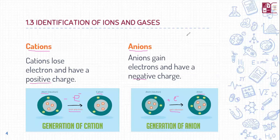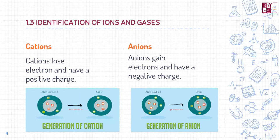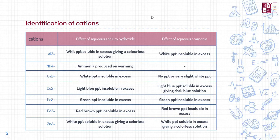Now I'm going to tell you how we can identify different cations and different anions, and describe the different tests. I have given this table, which is very important and it's going to be of great help for your exams. For example, they'll be asking you what cations are present, telling you the results of the tests, and asking you to identify the cation, anion, or gas.